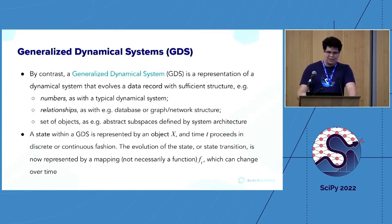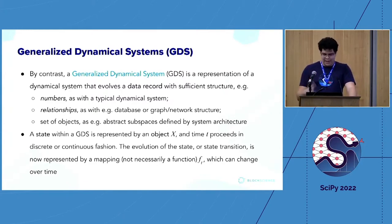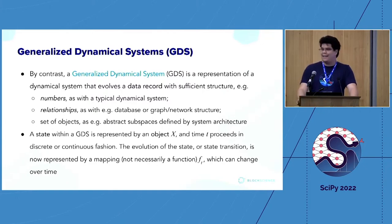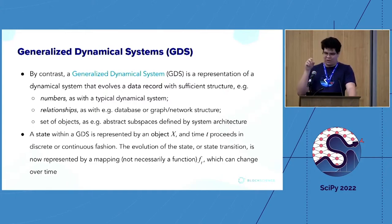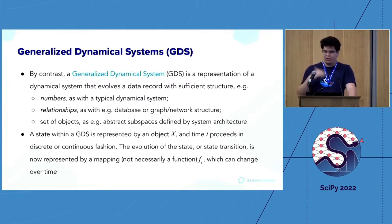The exact formalism of that evolution depends on whether the state transition is discrete or continuous over time. One step further: the generalized dynamical system is a representation of a dynamical system that evolves a generic data record with sufficient structure. That data record can be a number, a relationship as a database or graph structure, or any set of objects with a user-defined structure. A state within a GDS is represented by an object X that evolves over time T, discrete or continuous, via a mapping that may or may not change over time.